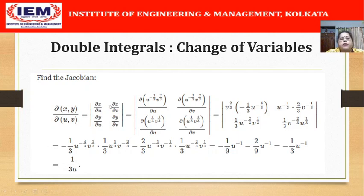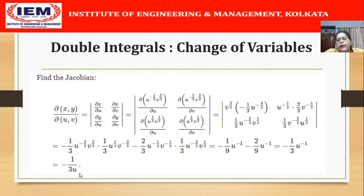Now we are ready to calculate the Jacobian ∂(x,y)/∂(u,v). We substitute the values of x and y, compute the partial derivatives, calculate the determinant, and we obtain −1/(3u). However, observe that this process is quite lengthy and tedious: we first had to transform the variables and get expressions for x and y in terms of u,v, and then the determinant calculation is also slightly lengthy.